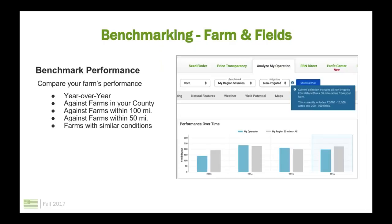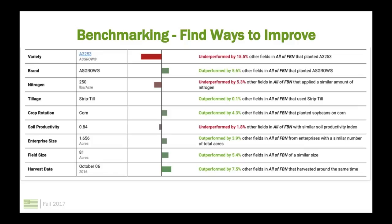Benchmarking lets you benchmark across a number of different variables when you upload data. You can benchmark your farm year over year, benchmark against other farms in your county, or against farms within 100 or 50 miles, and filter to farms with similar conditions — for example, irrigated versus non-irrigated. You can do this at the farm level or the field level, so if you have problem fields you want to dig into more deeply, you can see how similar fields are performing in your region and find insights to bring that field back up to par.